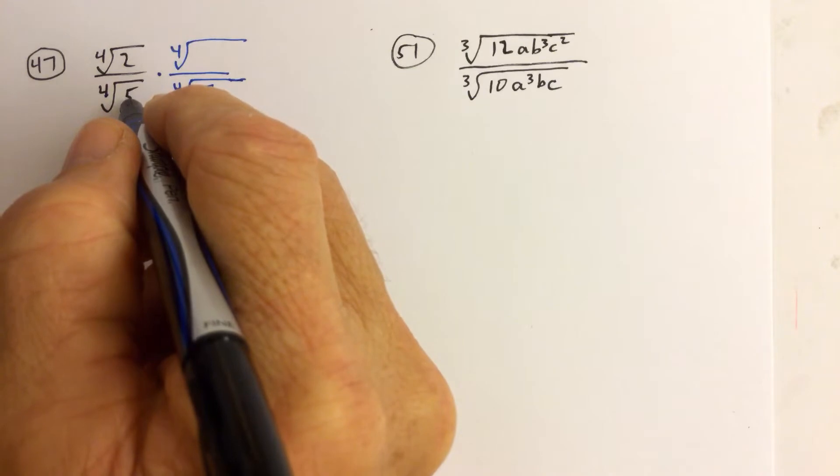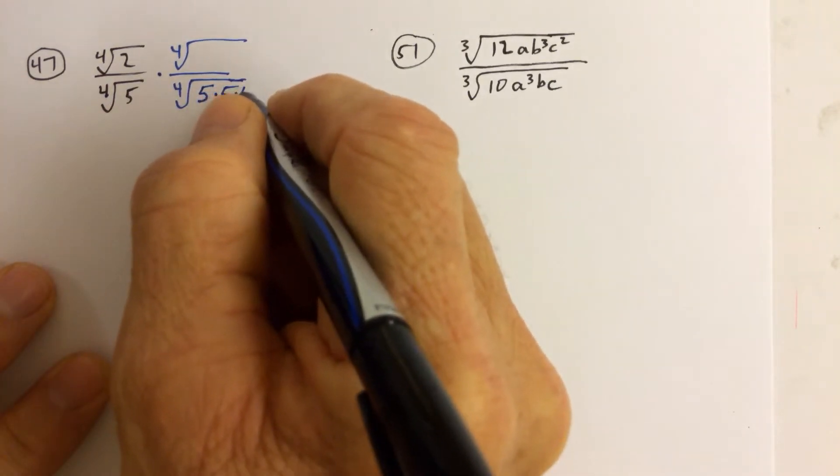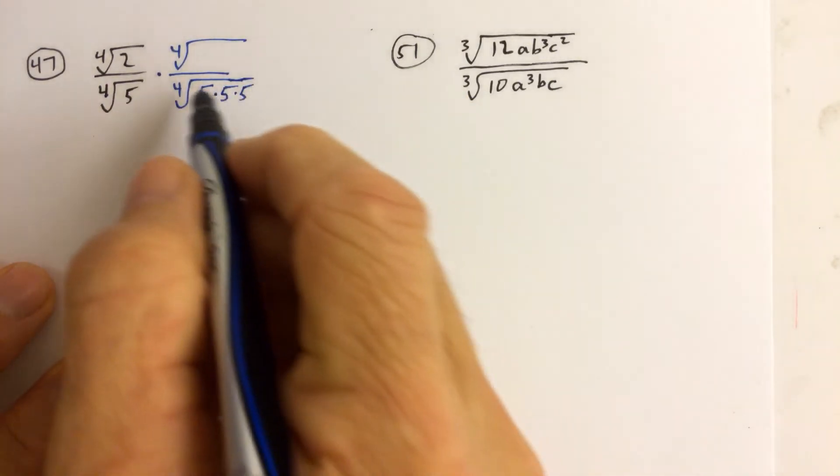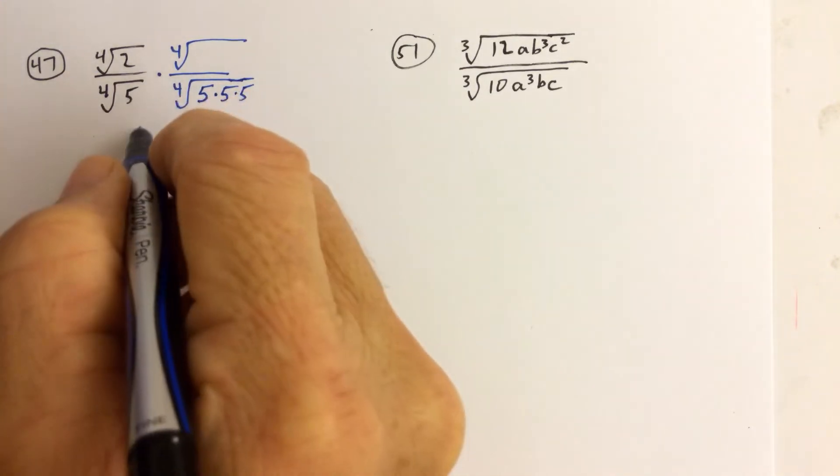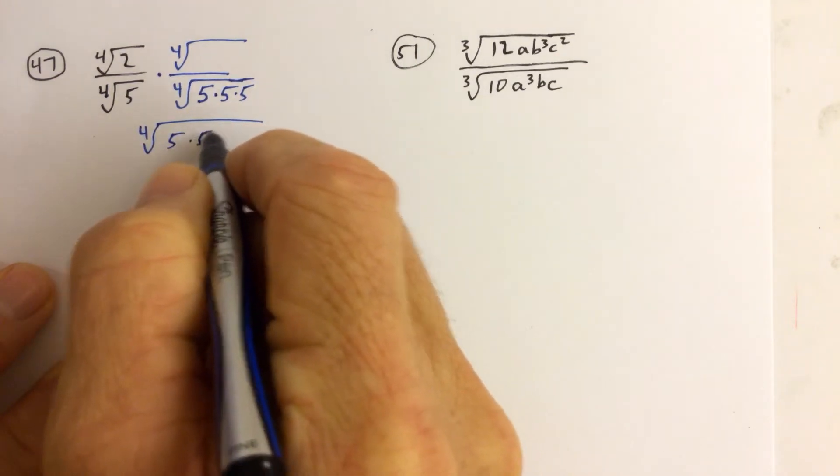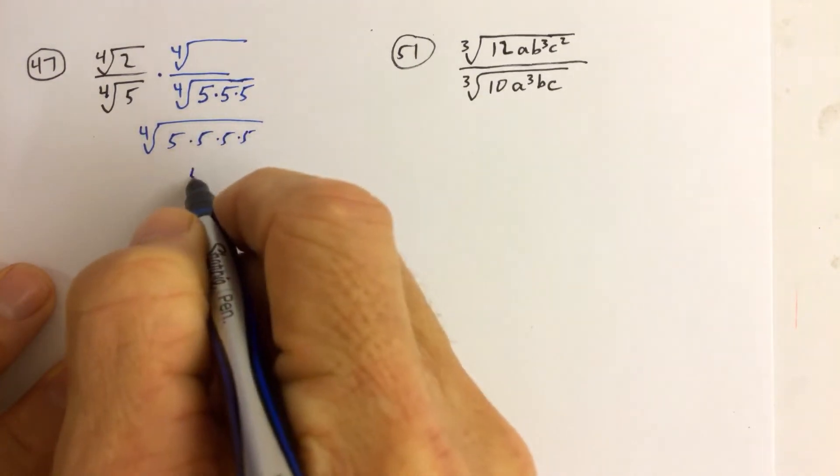So we have 1 five here. We need 4 fives. So I actually have to multiply top and bottom by the 4th root of 5 times 5 times 5. So therefore, when I combine them,